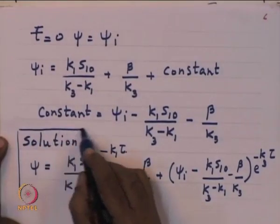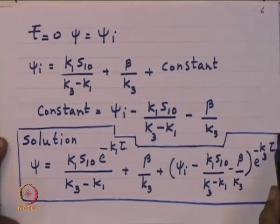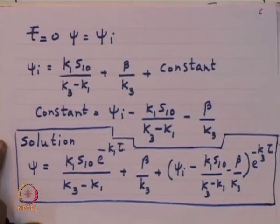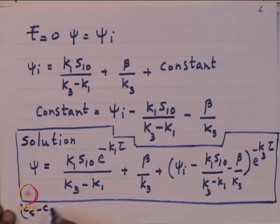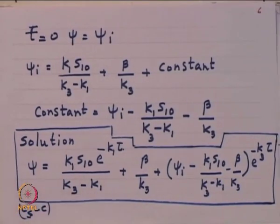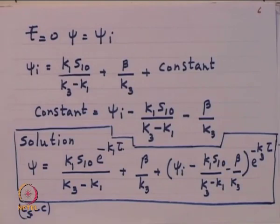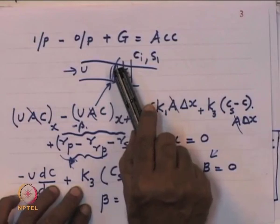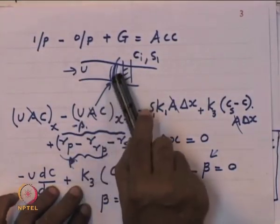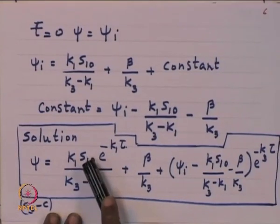If we want to put our waste into rivers, we must examine this equation carefully. Psi, the oxygen deficit (Cs minus c), is driven by k1 times S10 — where S10 is the pollution concentration after mixing with the river. S10 is calculated from a material balance: knowing the river flow and waste water flow, we find the combined pollution load. k1 and k3 are available from experiments for that environment.